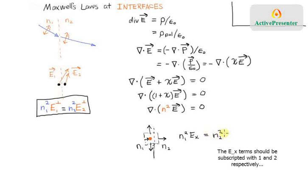N2 squared E_X on the right for a small arbitrarily small box.